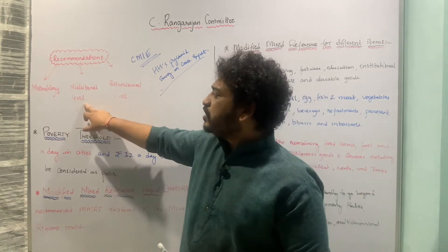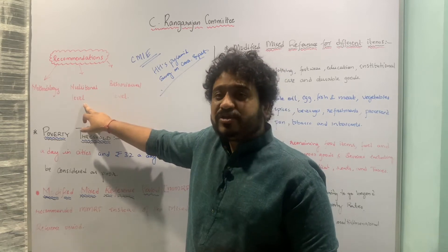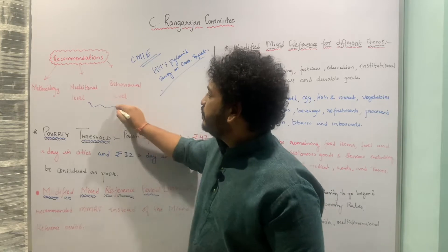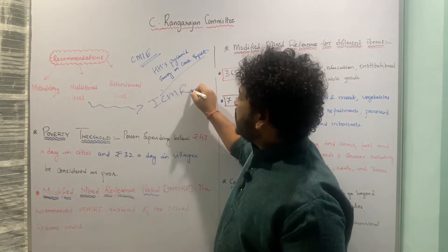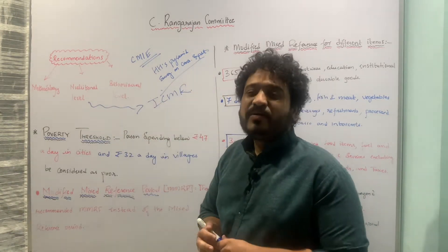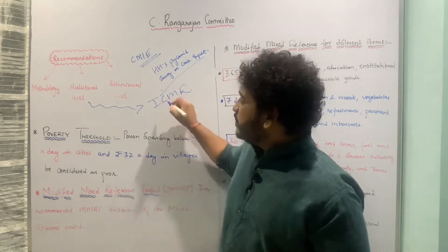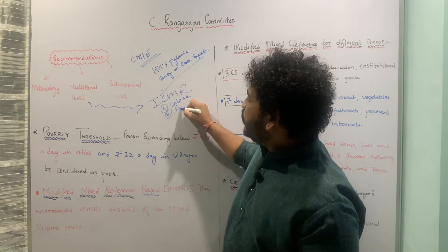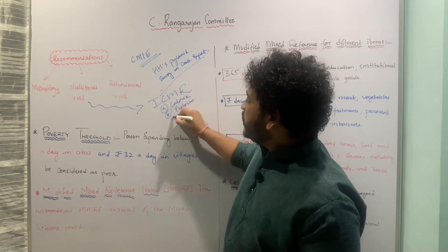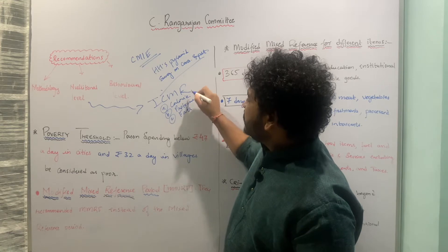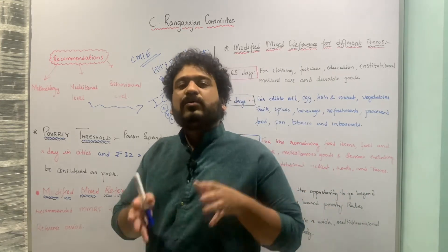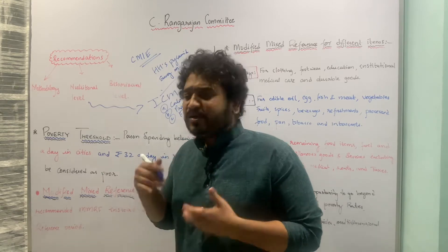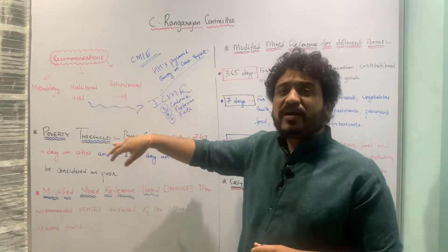We also talked about the adequate or minimum nutritional level that should be maintained. This was derived from ICMR — the Indian Council for Medical Research — data, which specified the minimum required calorie intake, the minimum intake of proteins, and the minimum intake of fats. We have seen that these numbers differ between urban and rural areas, which was covered in the previous class.